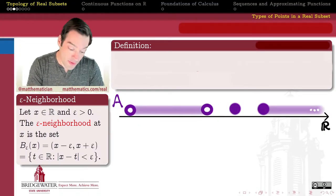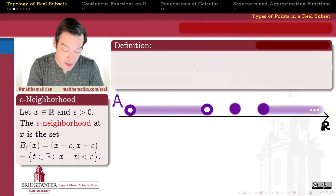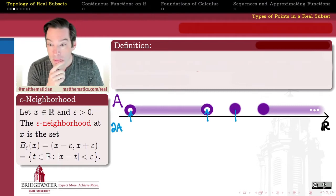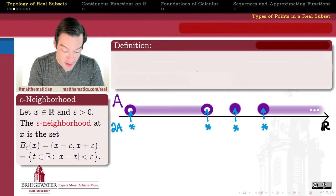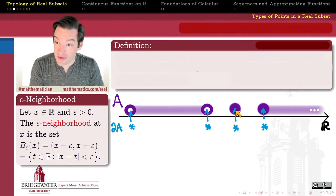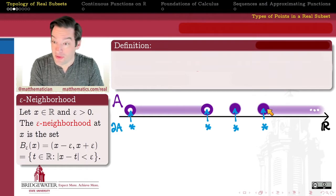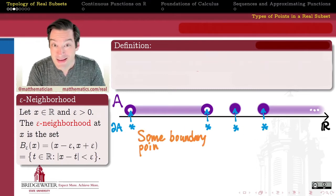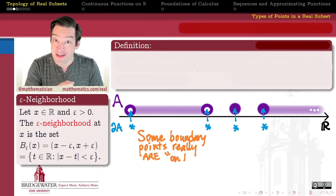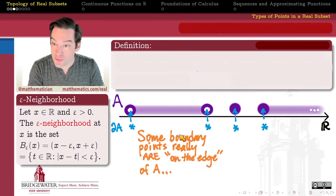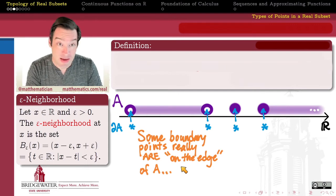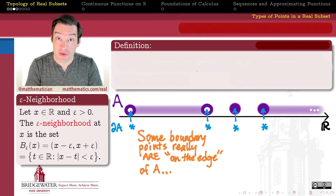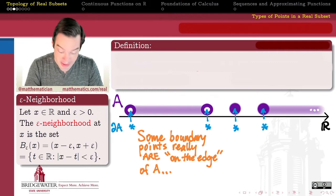Let's start with a randomly chosen subset of the real numbers. The set sketched here consists of an open interval, union together with an isolated point, union together with an infinite closed interval. There are four points in the real number system which qualify as boundary points, so the boundary of A is those four points. But some boundary points are qualitatively different than others.